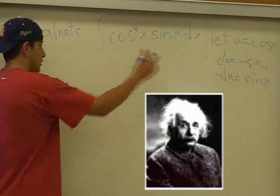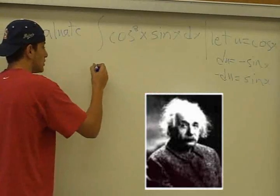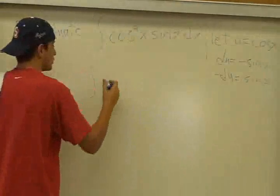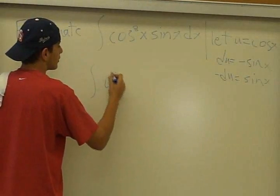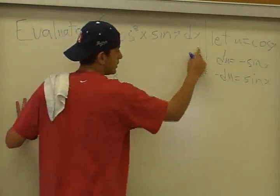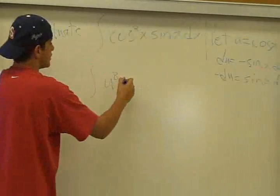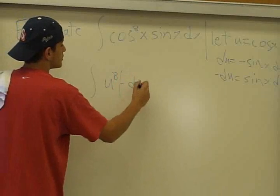All right, so we need to plug in the u and the du into this. So it will be u to the a, that's cosine of x right here, u to the a, and then sine x dx over here. So that's negative du times negative du.